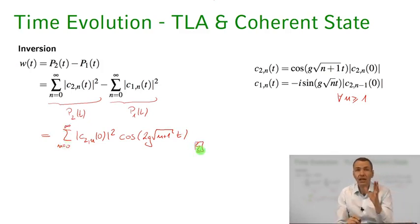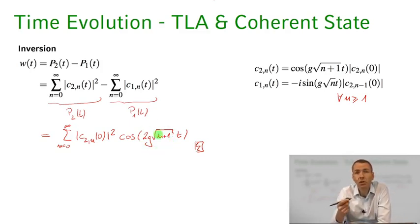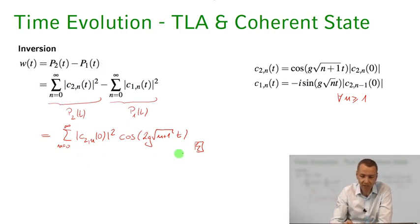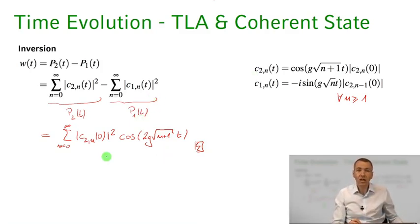The inversion is basically a sum of different Rabi oscillations occurring at different Rabi frequencies 2g√(n+1). We're not surprised by that because the coherent state is formed by a superposition of different Fock states. Each of those Fock states makes Rabi oscillations at its own quantized Rabi frequency, so we expect the inversion to be a sum of these different Rabi frequencies — and that's indeed what we get by plugging these formulas in.